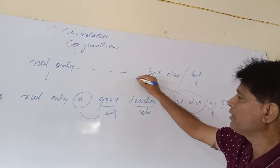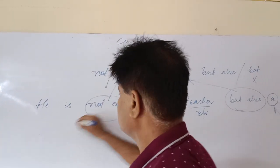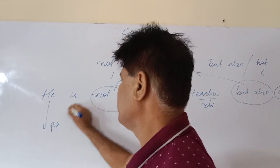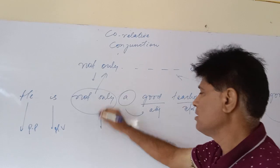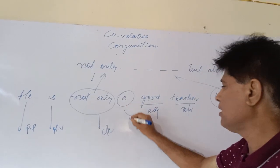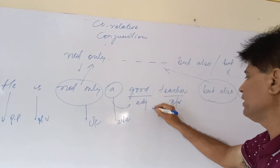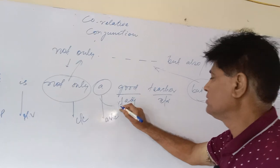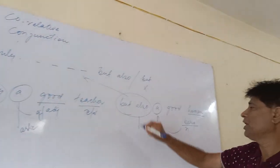Whereas 'not only' is co-relative conjunction. The same sentence: 'he' is a personal pronoun, 'is' is a helping verb or linking verb. 'Not only' is co-relative conjunction, 'a' is an article, and 'good' is an adjective of quality. 'Teacher' is a common noun. 'But also' is another conjunction.